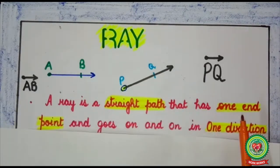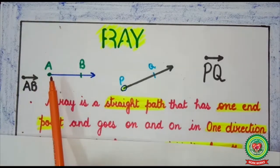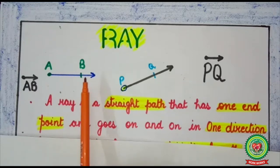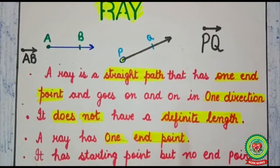Next is ray. A ray is a straight path that has one end point and goes on and on in one direction. A ray starts from a fixed source and covers a straight path — it goes in one direction only. It does not have a definite length, and a ray has one end point: it has a starting point but no end point.